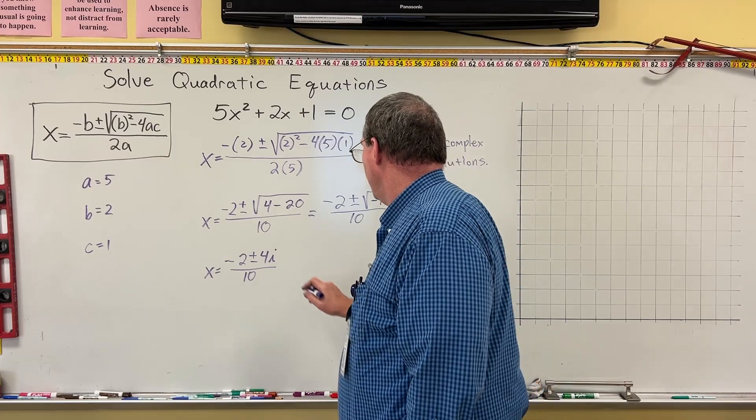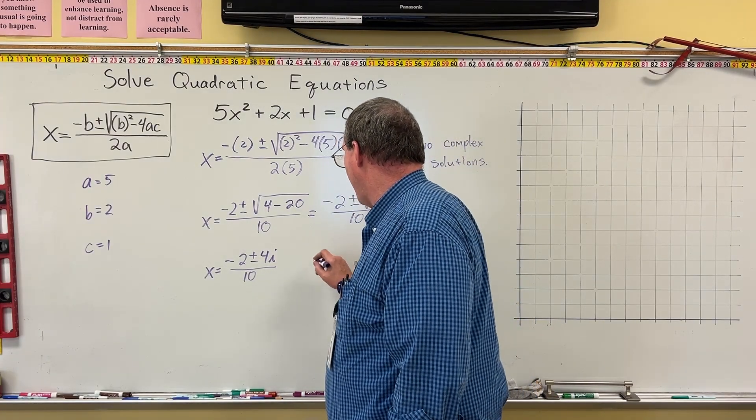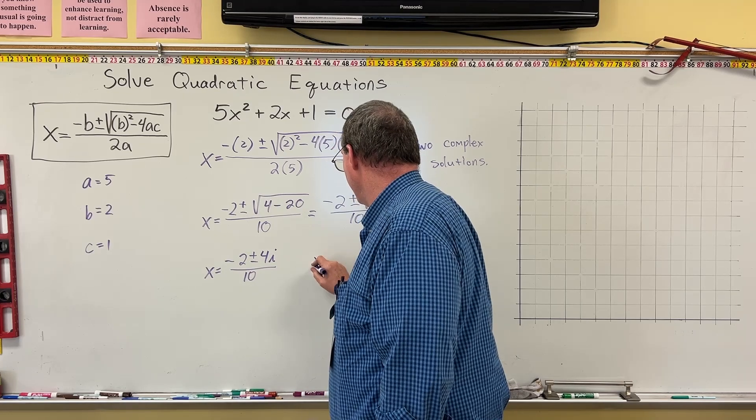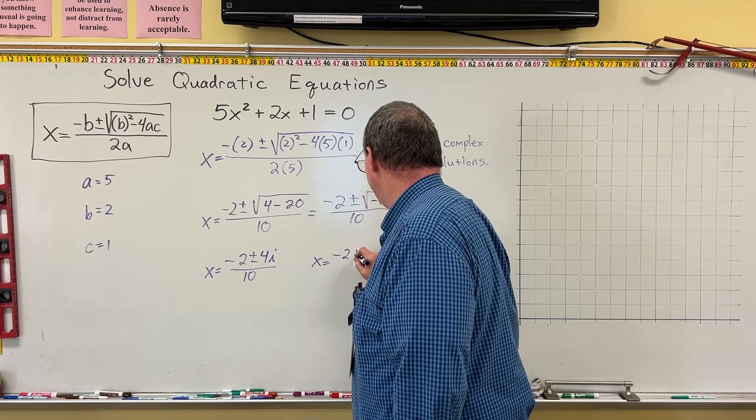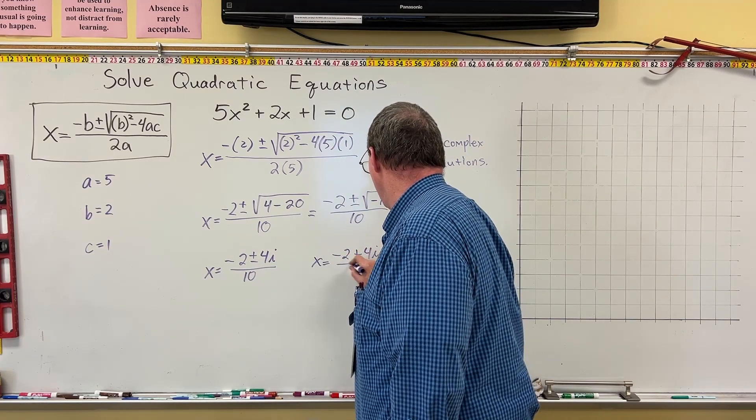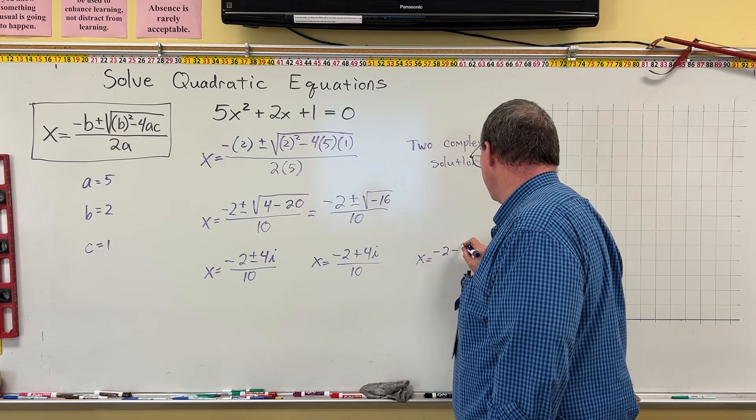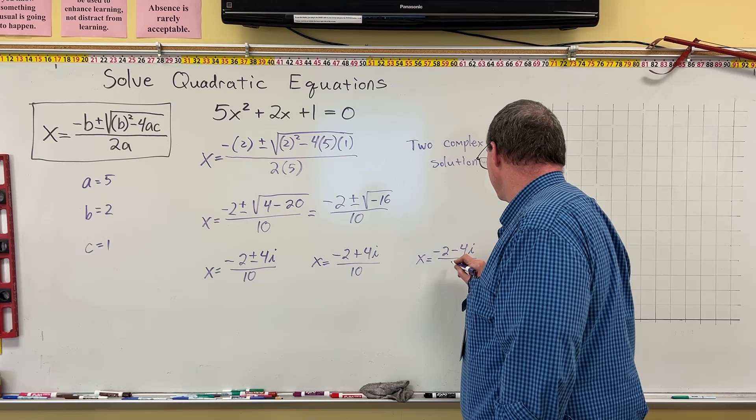And so now we can split this out into two. We can do negative 2 plus 4i over 10. So one of the solutions is negative 2 plus 4i over 10. And the other one is x is equal to negative 2 minus 4i over 10. But this is not an answer.